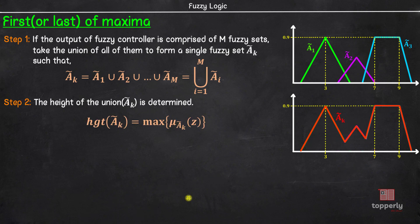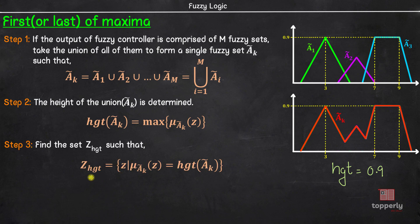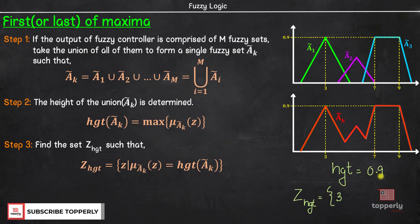The next step is to find the height of the fuzzy set formed by the union. In our example, we can see that the maximum membership value is 0.9, so the height is equal to 0.9. Then we need to find the set of all values of z for which the membership value is equal to the height. In our example, this set is given by hgt = {3}, as the membership value of 3 is 0.9, which is equal to the height.